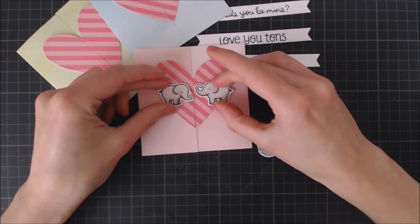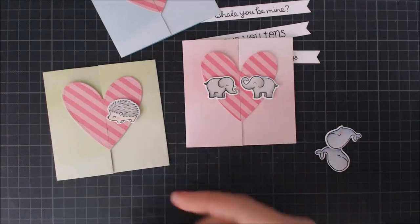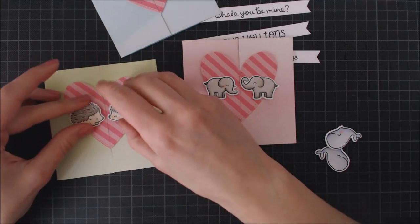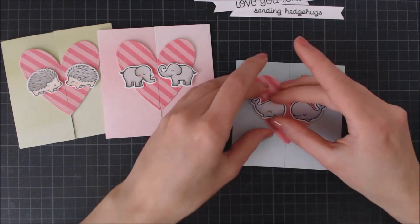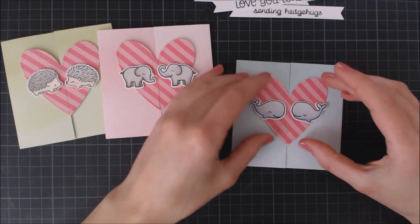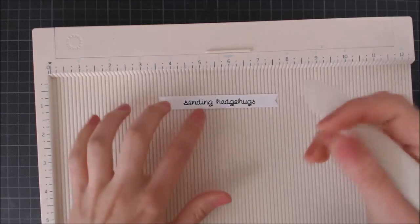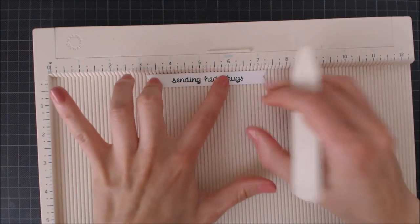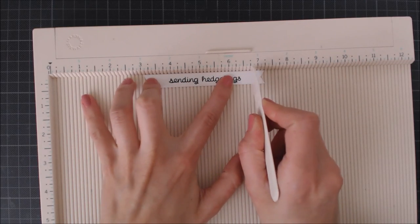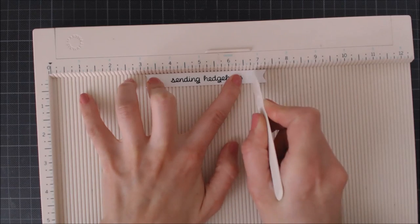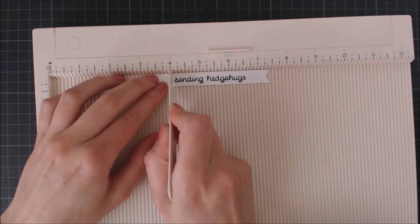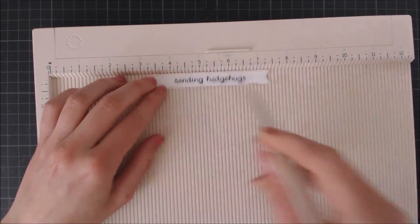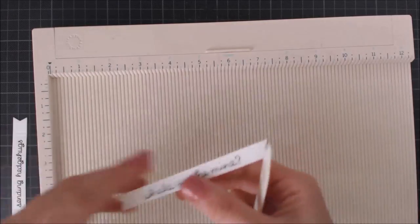Now it's time to add all our little critters onto the cards. To give them some dimension I'm using foam adhesive to attach them on top of the hearts. I wanted to add some dimension as well on the banners. So I'm going to use my scoring board to do some score lines and then transform them into folded banners.